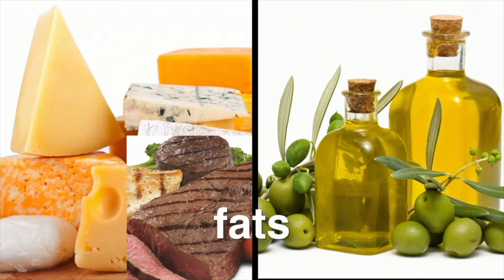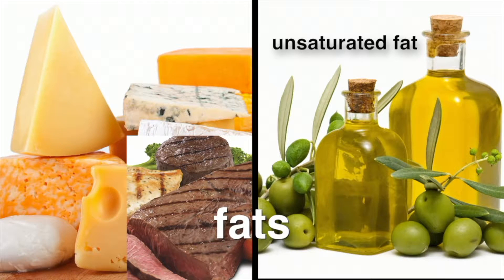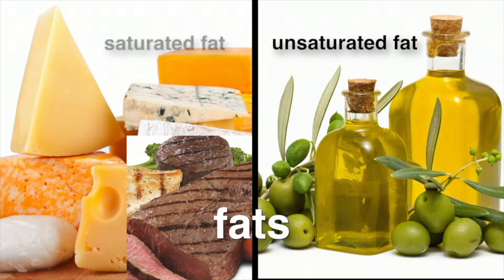Fats are nutrients that provide energy and building materials for your body. There are two types of fat. Unsaturated fat is usually a liquid at room temperature, such as olive oil and canola oil. Saturated fats are usually solid at room temperature and include meats and cheeses.